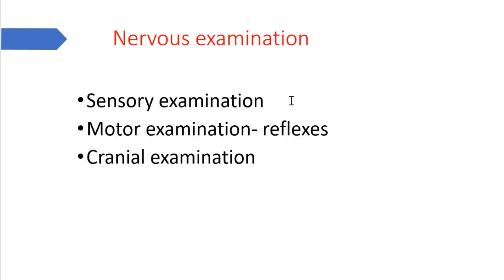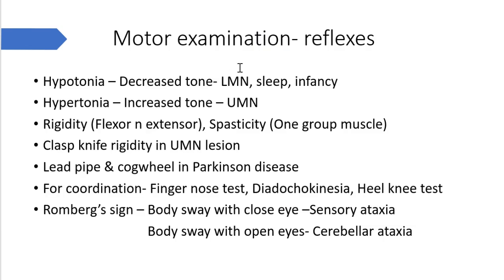Nervous examination is divided into three categories: sensory, motor, and cranial examinations. From an exam point of view, the most important parts are motor examination — in which reflexes can be asked — and cranial examination.